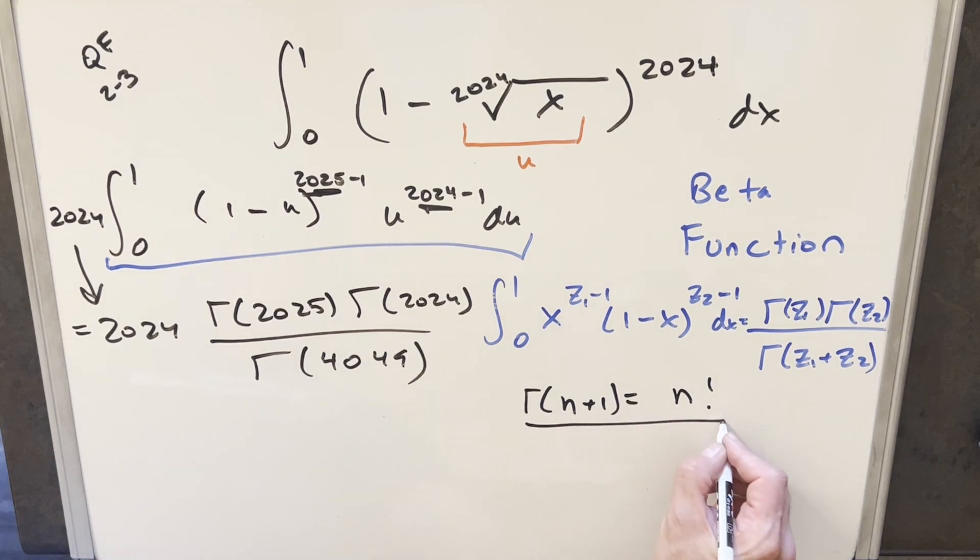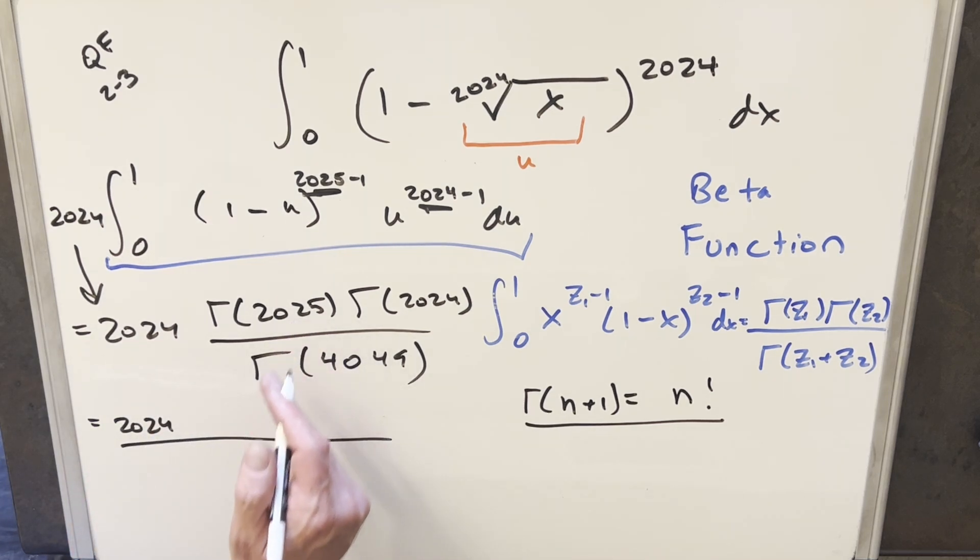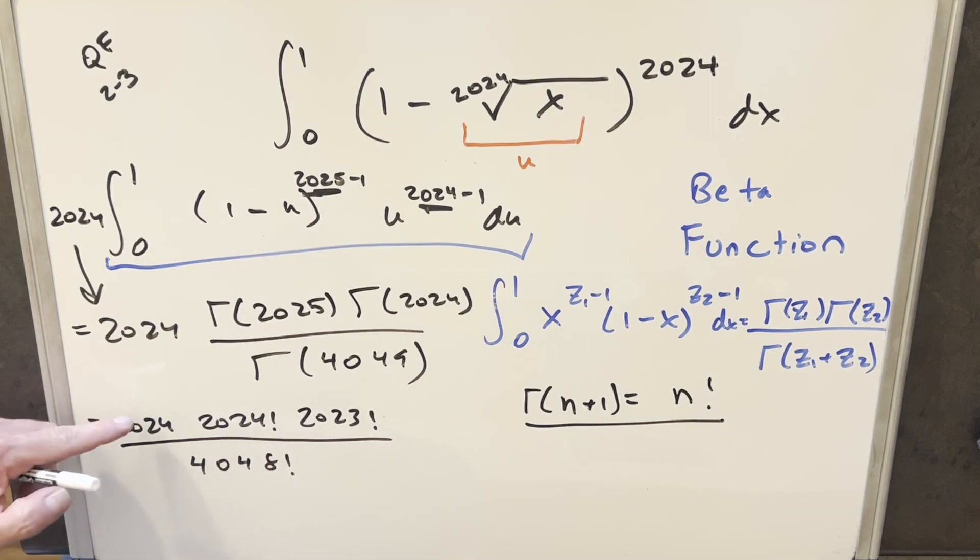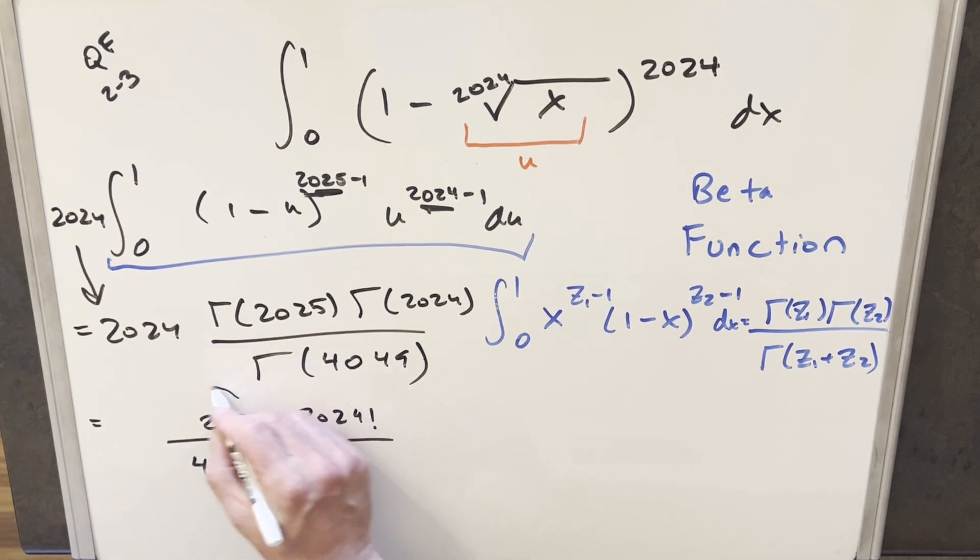But now we can use this thing to simplify it. So we still have our 2024 in front. I'll put this all in the numerator like this. Then 2025 is going to become 2024 factorial. And then this is going to become 2023 factorial. And this is going to be all over 4048 factorial. But then here 2024 times 2023 factorial, I can just multiply those together and rewrite this as 2024 factorial.